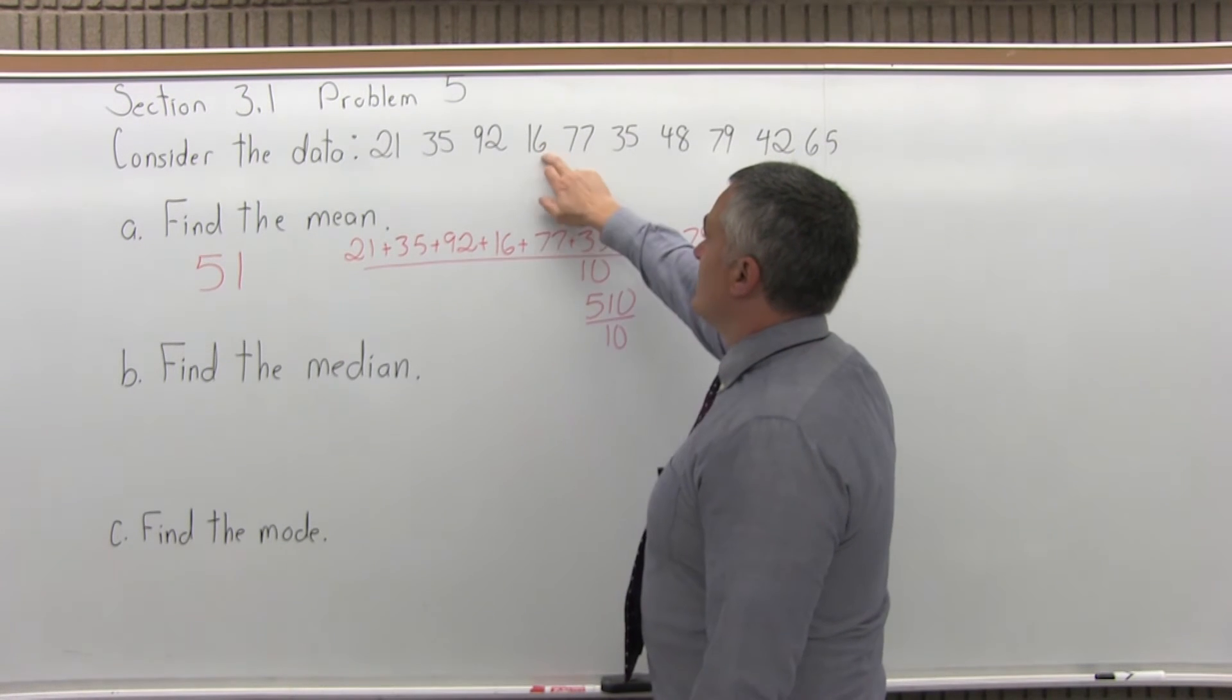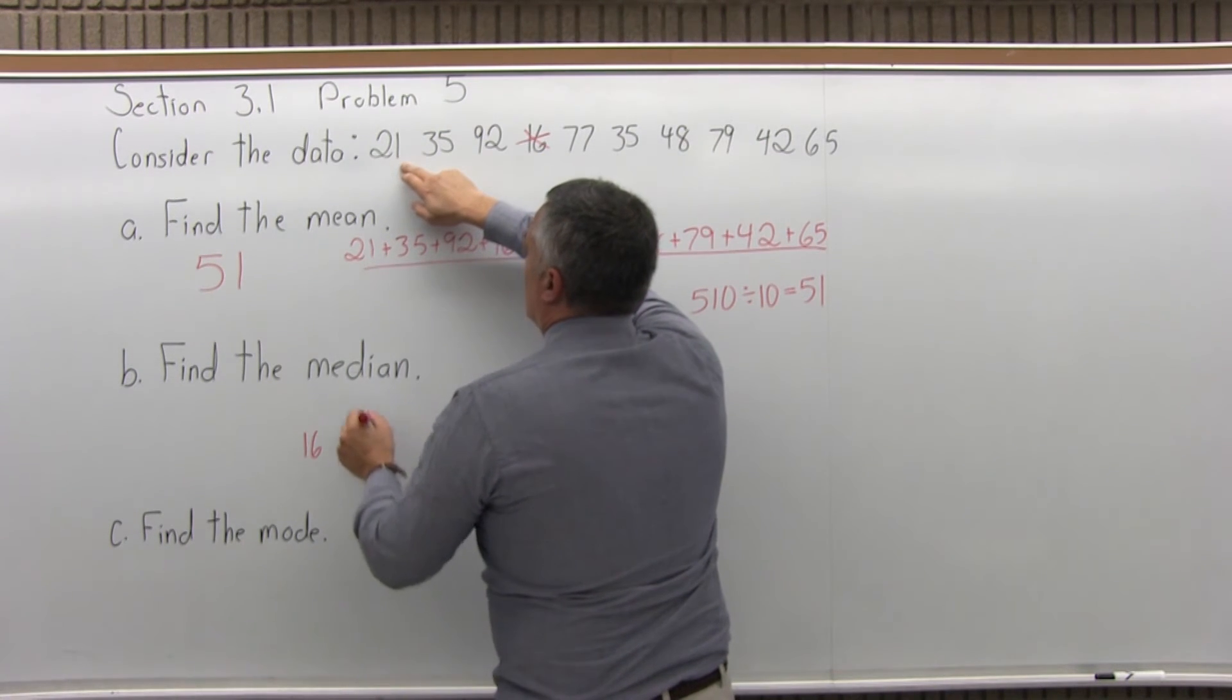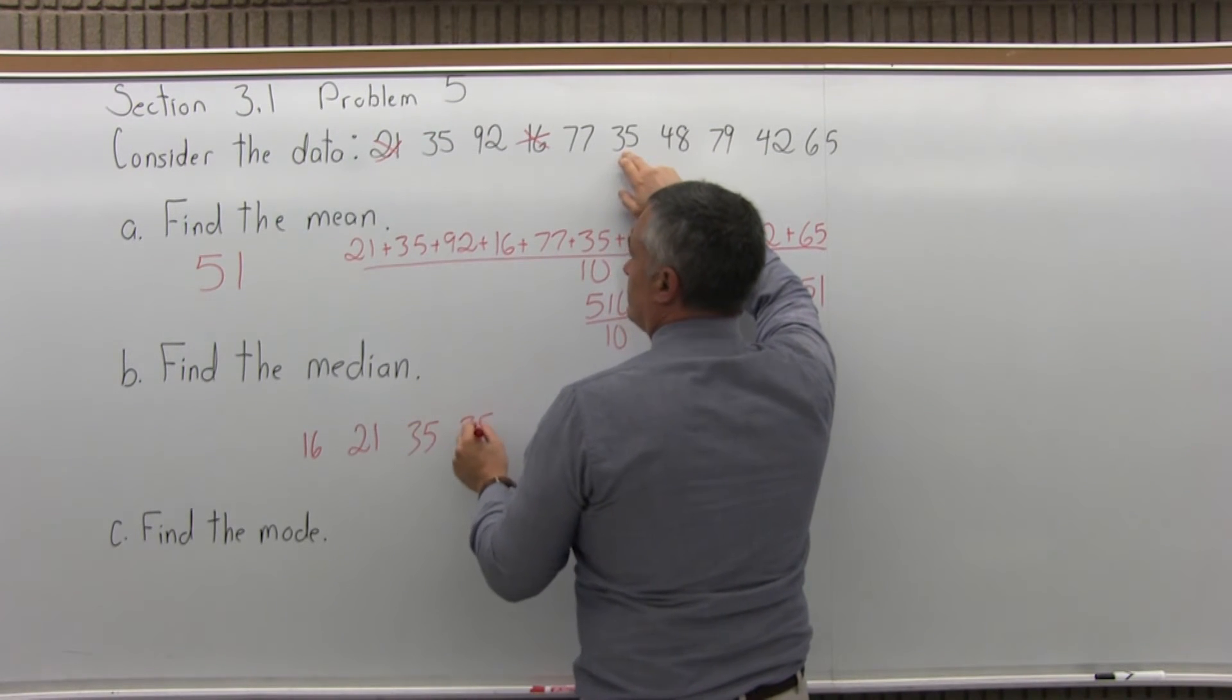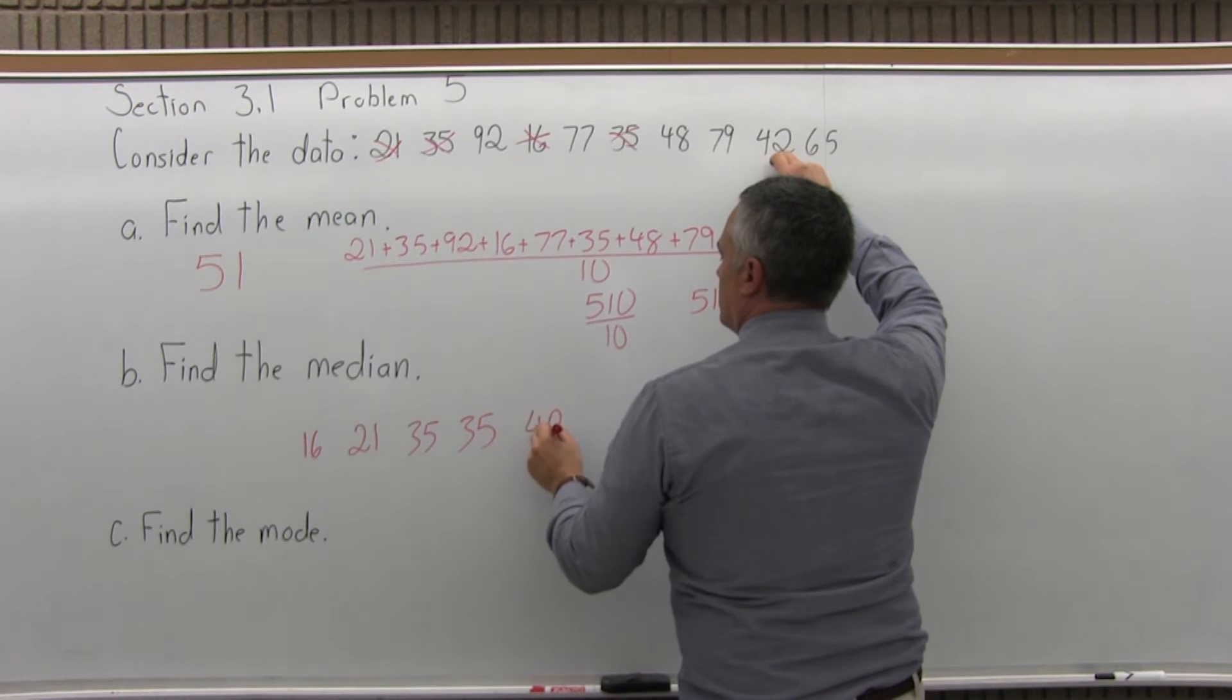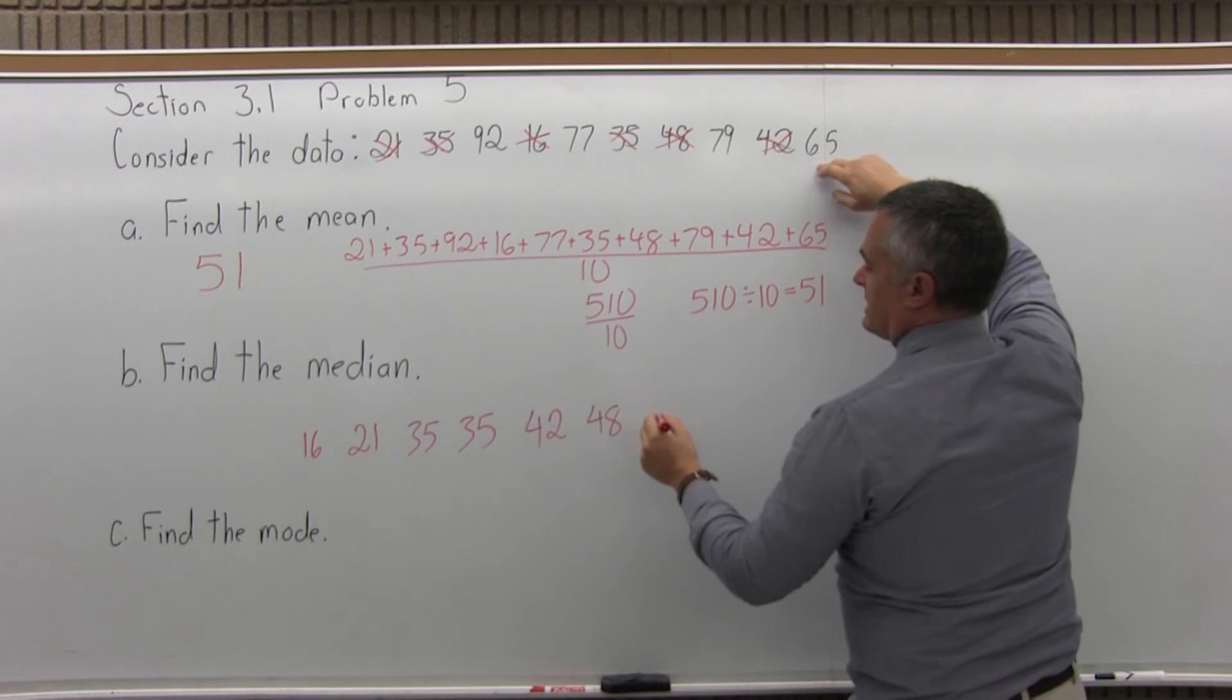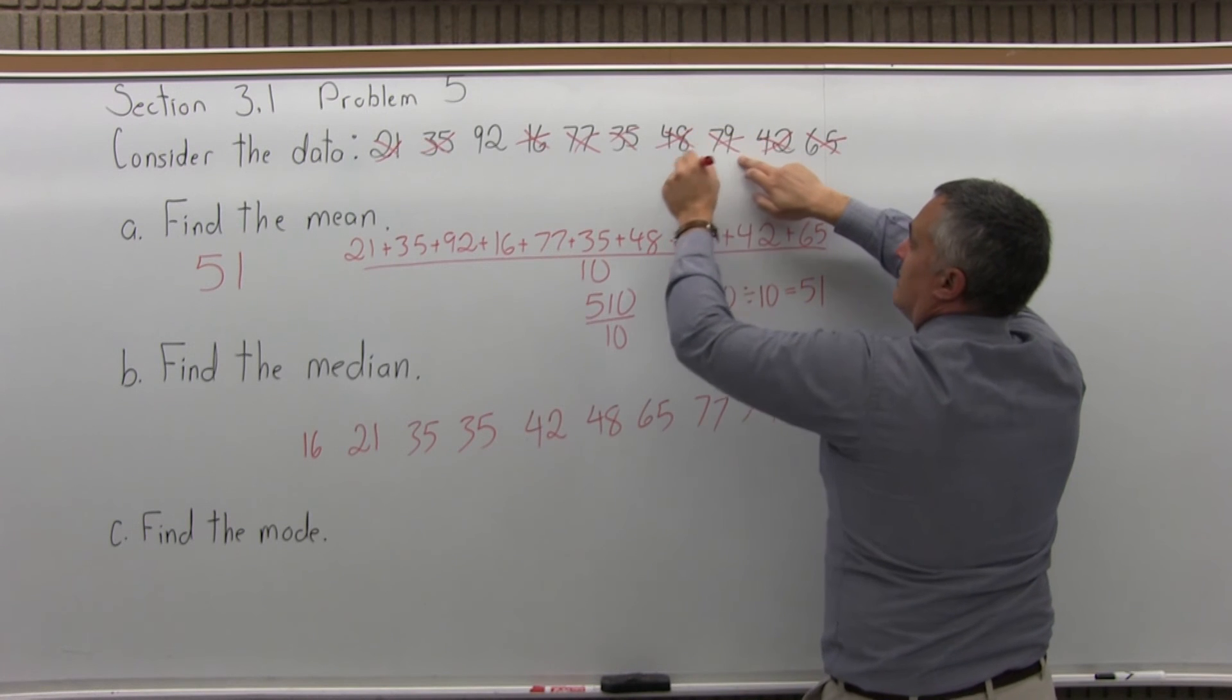So the smallest data value as I look, I have a 16, seems to be the smallest. And then I have a 21. And then I have two values of 35. And then 42 is next. Then 48 after that, and no values in the 50s. So 65 looks like it's next, 77, 79, and 92.